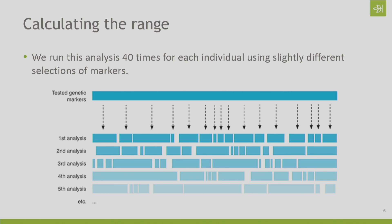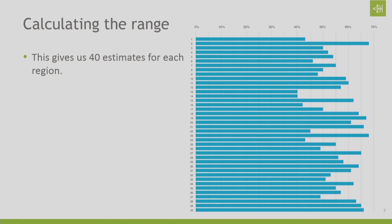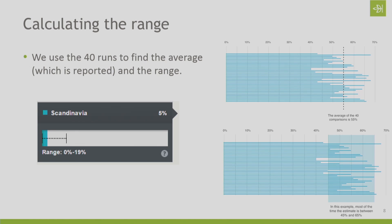With this likelihood-based method, you could have slightly different answers depending on your input and your reference panel. To account for that, we run what's called bootstrapping. We run your analysis to calculate your ethnicity estimate 40 times, each time using a slightly different selection of genetic markers. Once we've run that test 40 different times, we have 40 estimates for each region. For example, for Great Britain, you might have sometimes as low as 40% and sometimes as much as 70%. We then calculate the average — which might be 55% — and look at the range of how low and how high the estimate might go.